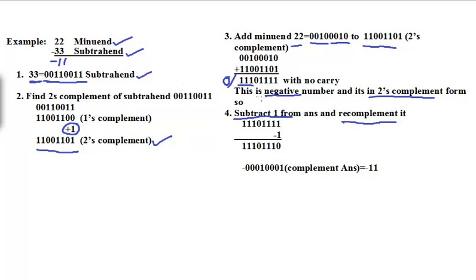We subtract 1 from the answer 1110 1111. 1 minus 1 is 0, and 1 remains as it is, and all remaining bits stay as they are. So we get 1110 1110.